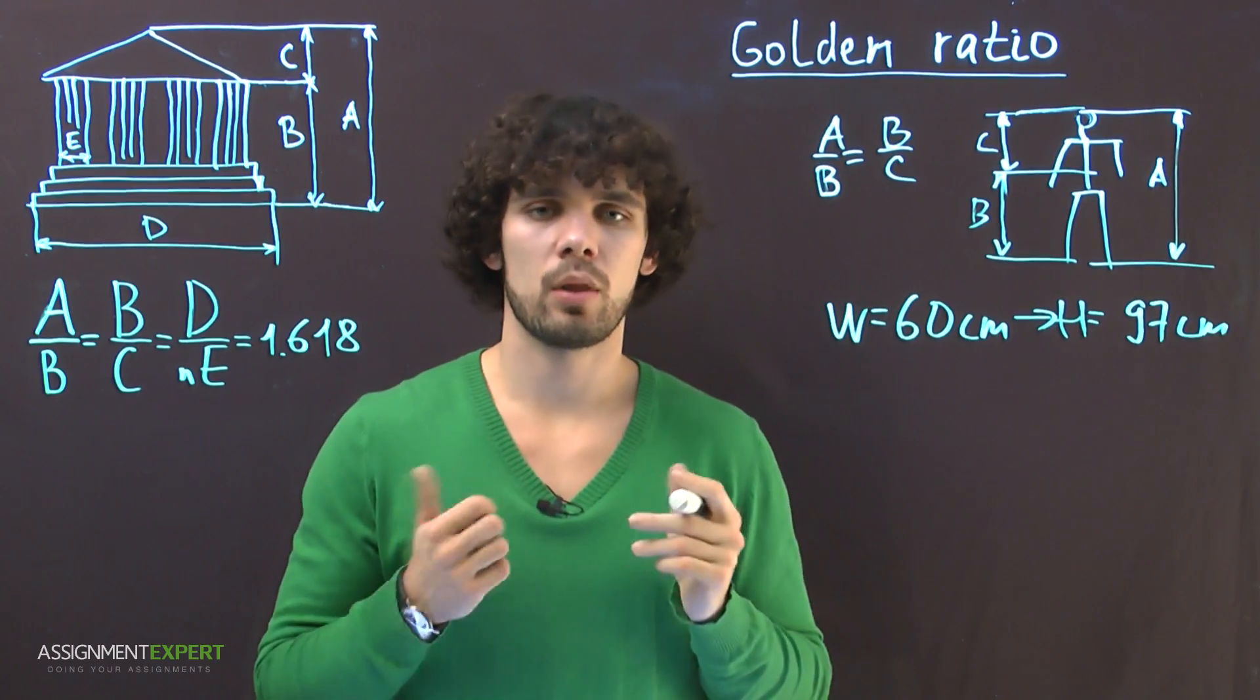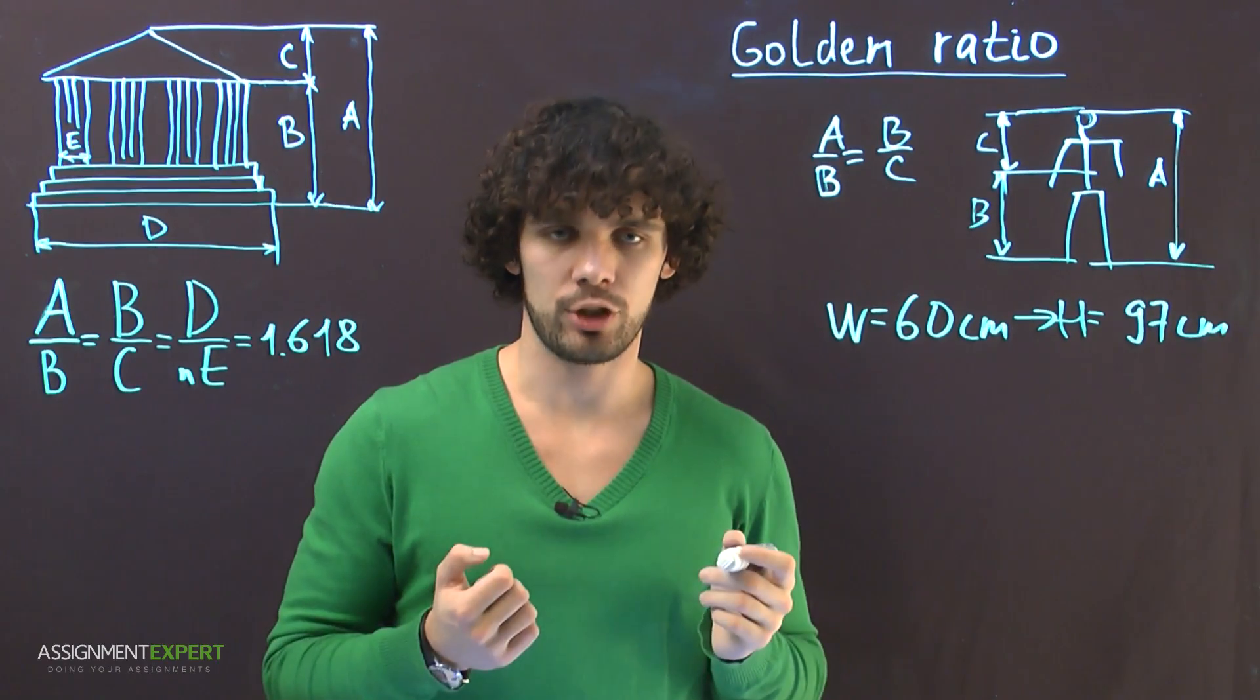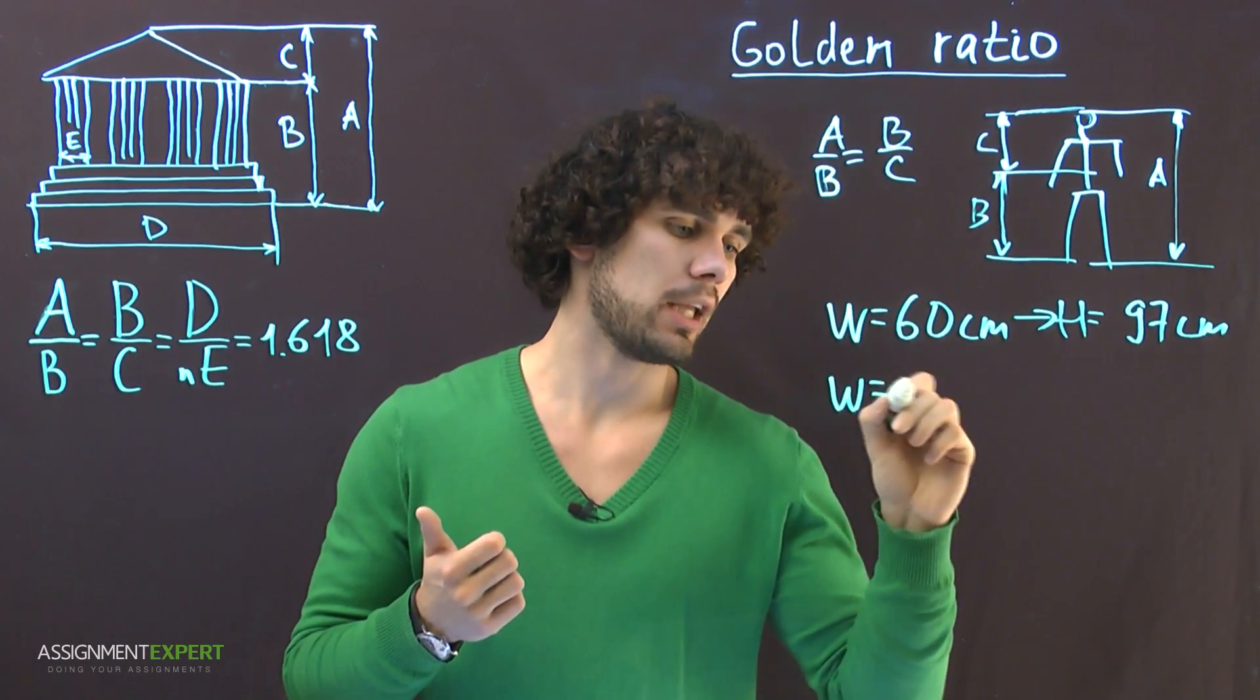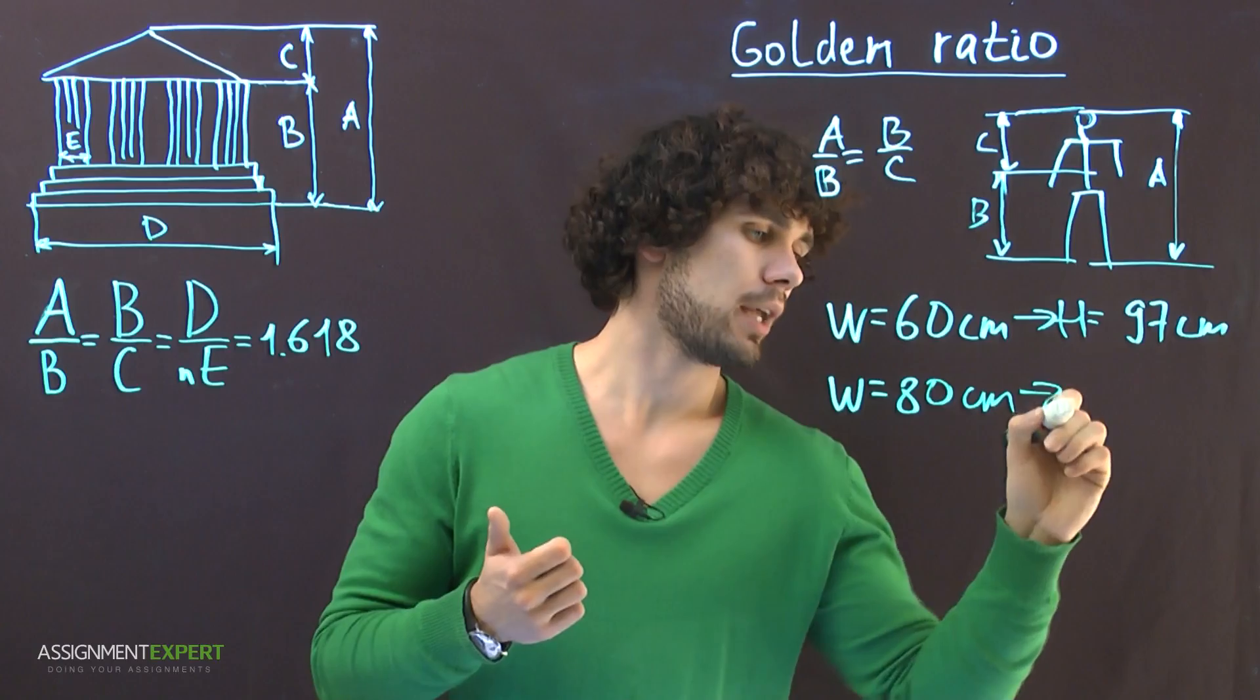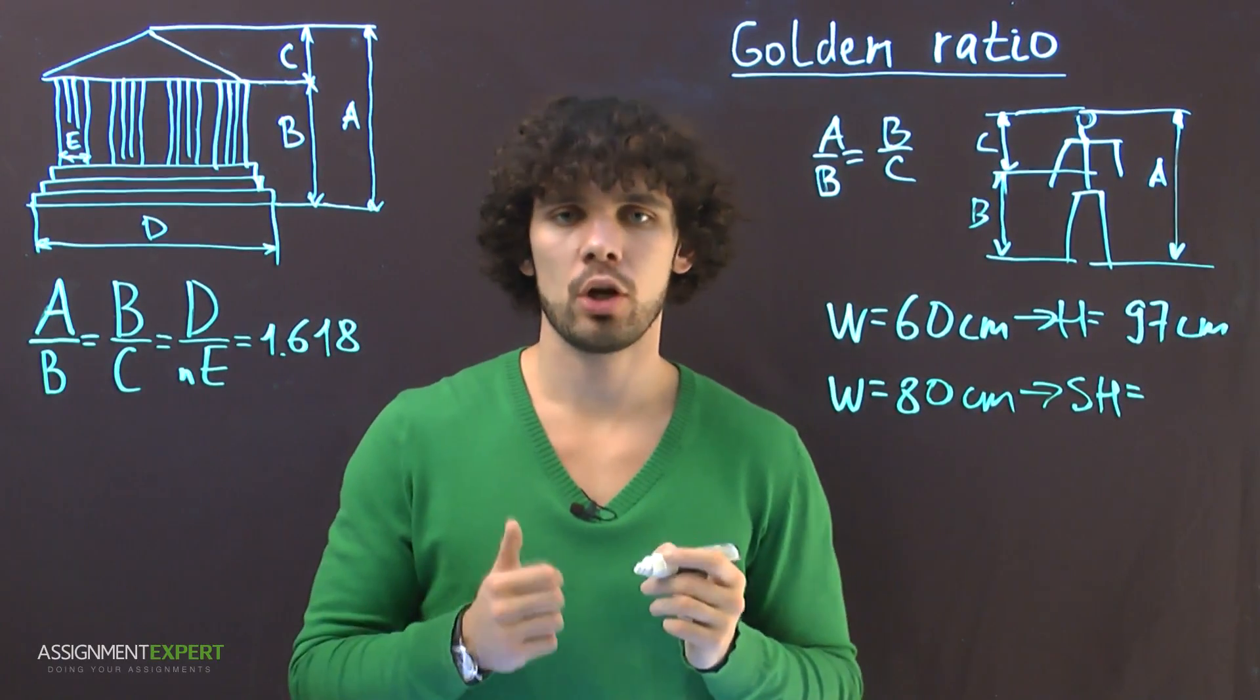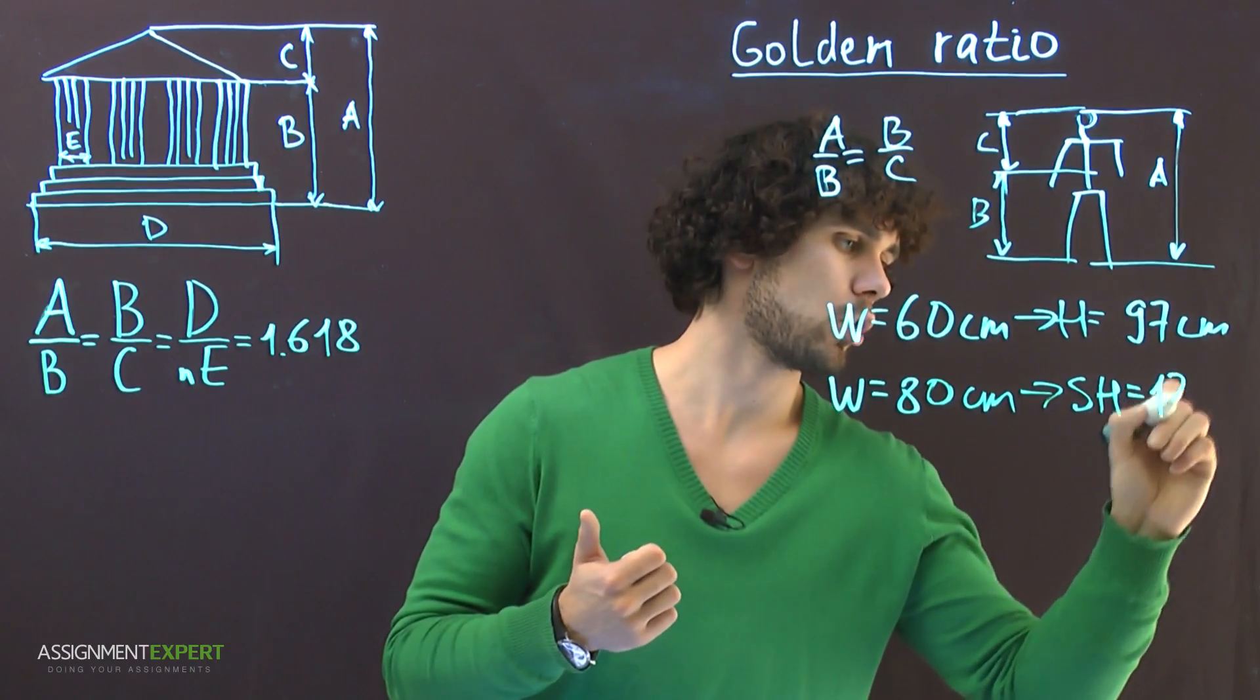So this is somewhere close to the modern 90-60-90 standard. And if we take a guy with waist circumference 80 cm, then his shoulders should be 80 times golden ratio and we'll get 128 cm.